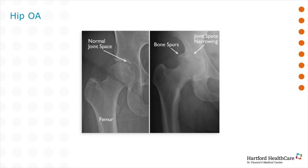Here are x-rays demonstrating a normal hip on the left and an osteoarthritic hip on the right. The radiographic hallmarks of an osteoarthritic hip include loss of joint space, loss of congruity, bone spur formation, or hardening of the bone.